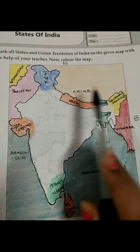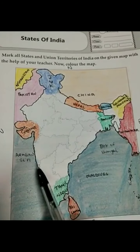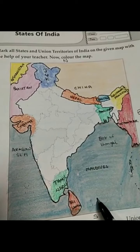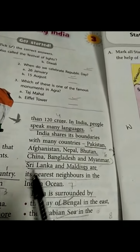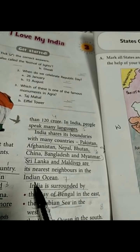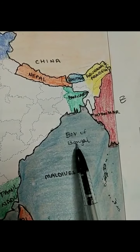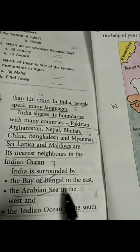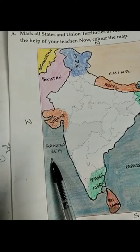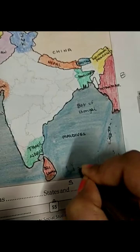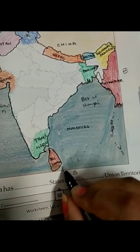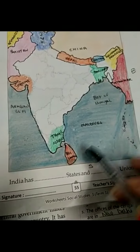India is surrounded by the Bay of Bengal in the east, the Arabian Sea in the west, and the Indian Ocean in the south. Arabian Sea yahaan, Bay of Bengal yahaan, Indian Ocean yahaan — toh India yahaan se puri ocean se ghiri hui hai.